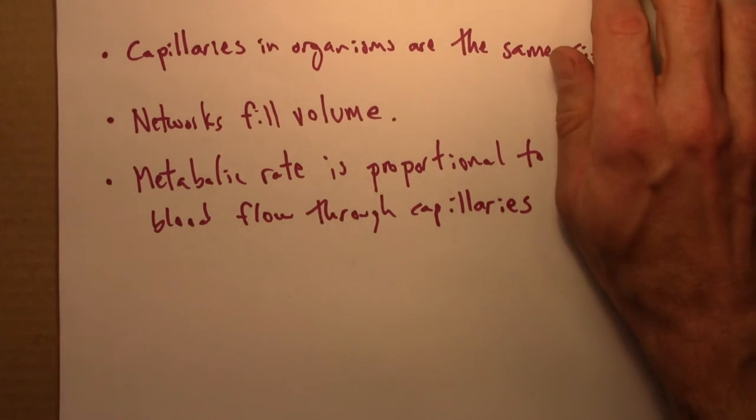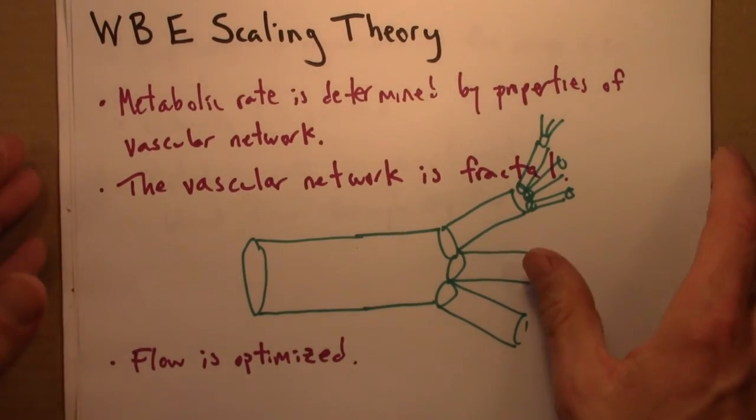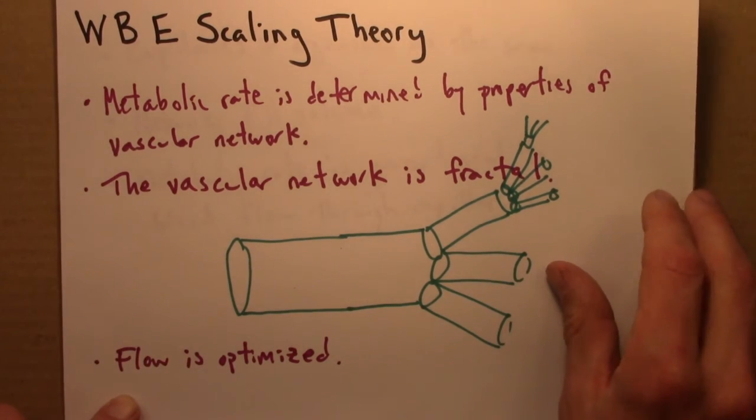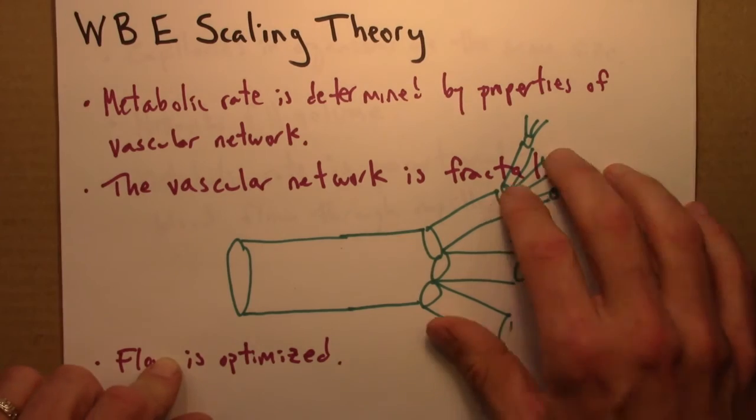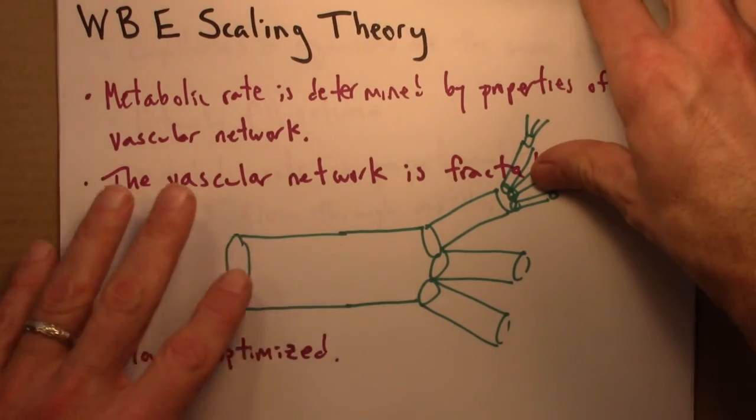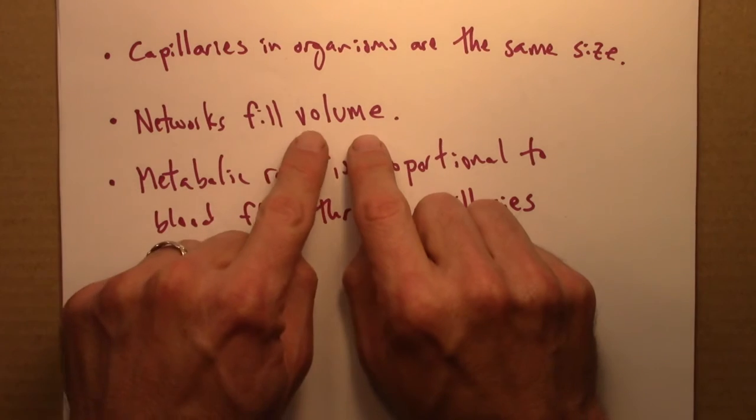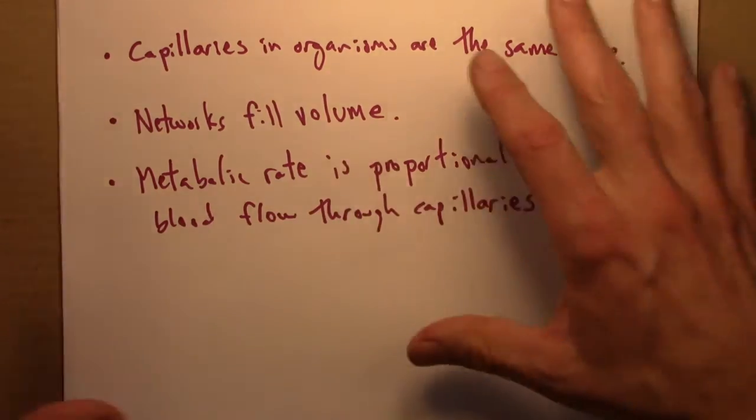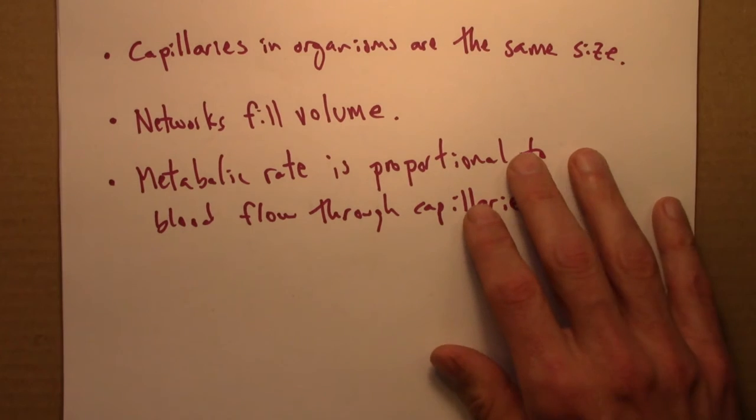So then what they did was they combined these statements, these assumptions, which I think for the most part are pretty well established and well grounded. And they did basically a bunch of geometry and some mathematics to relate a number of different scaling properties. Sort of hinges on this that they're filling out the volume and the volume here is three dimensional. So organisms are three dimensional. And if one does a bunch of work mathematically with this,